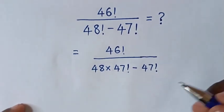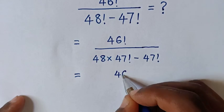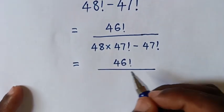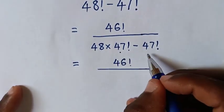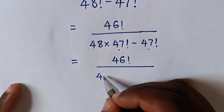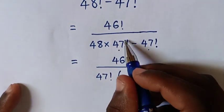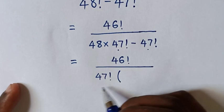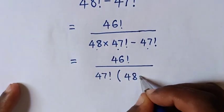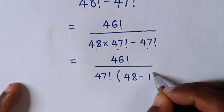Then this is equal to 46 factorial over — here we have a common 47 factorial, so we take 47 factorial out of the bracket. Then this divided by this is 48, then minus this divided by this is 1.